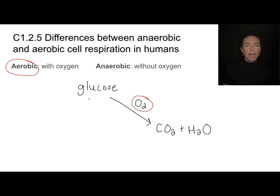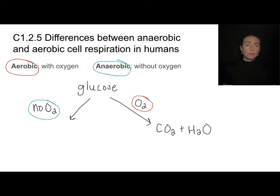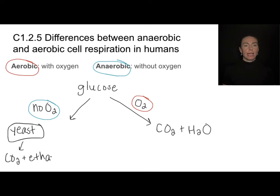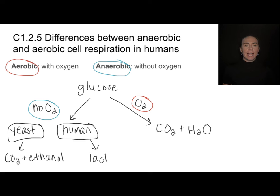If we do not have oxygen, that is what we call an anaerobic pathway. What happens at this point depends on the type of organism. If you are yeast and don't have oxygen, you will produce carbon dioxide and ethanol as byproducts. If you are a human — and also some bacteria — then you will produce something called lactate as a byproduct. Some people also call that lactic acid; they're synonymous.